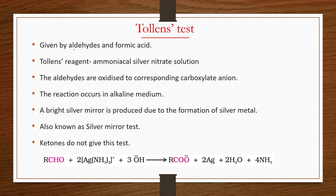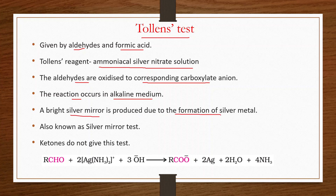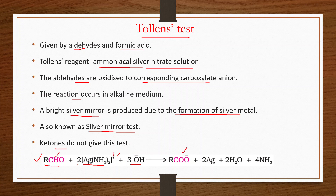Tollens test is given by aldehydes and formic acid. Tollens reagent is ammoniacal silver nitrate solution. The aldehydes are oxidized to corresponding carboxylate anions. The reaction occurs in alkaline medium. A bright silver mirror is produced due to formation of silver metal — this is also known as the silver mirror test. Ketones do not give this test. Reaction: RCHO + 2[Ag(NH₃)₂]⁺ → RCOO⁻ + 2Ag (silver mirror).